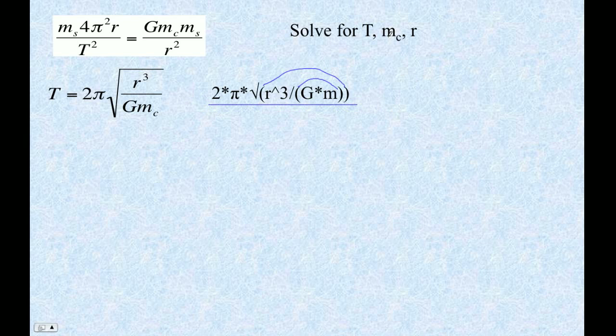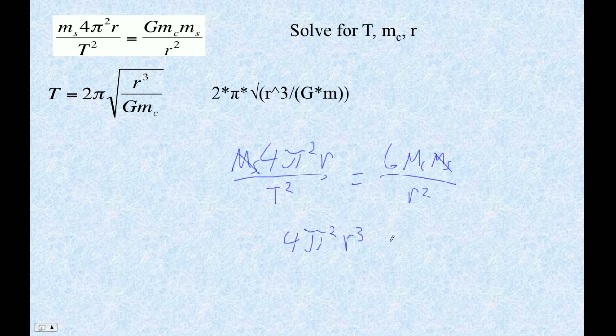Next, I'm going to bust out what the central body mass is. So ms, 4 pi squared r over t squared is equal to g mc ms over r squared. Again, the satellite mass cancels dutifully. We're going to cross multiply, 4 pi squared r to the third equals g mc t squared. And now we're solving for the central body mass. So I'm going to divide by g t squared. Those things go the way of the bison, and there it is. That's what it looks like, all prettied up.